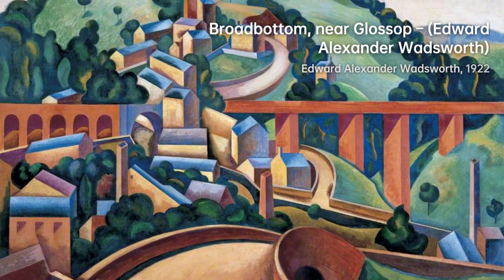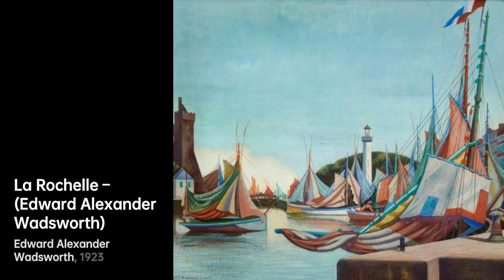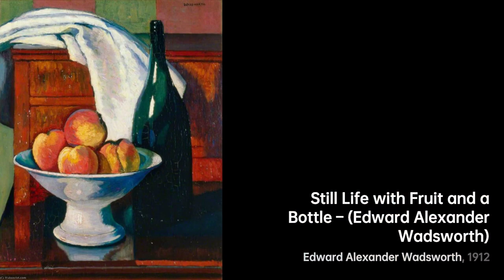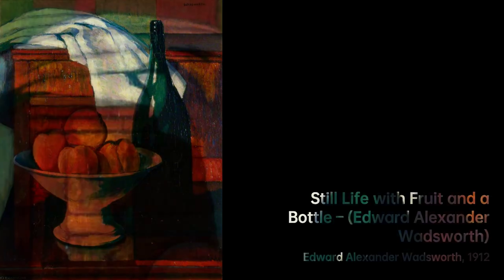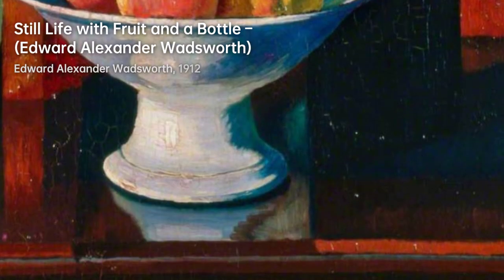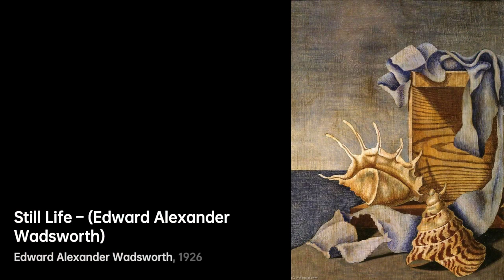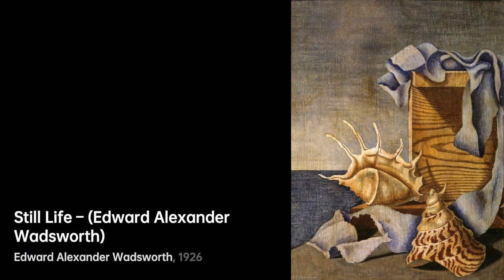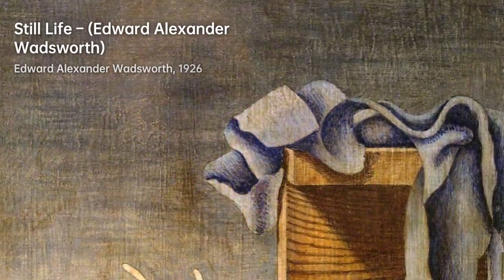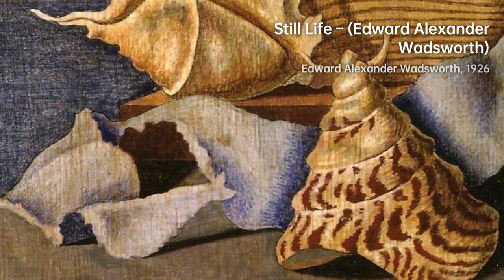Wadsworth's artistic career was marked by his involvement with the vorticist movement. Vorticism was a short-lived but influential avant-garde movement that emerged in London in the early 20th century. It was characterized by its abstract geometric forms, dynamic compositions, and emphasis on the machine age. As a prominent member, Wadsworth contributed to the development and promotion of vorticism through his artworks and collaborations with other artists.